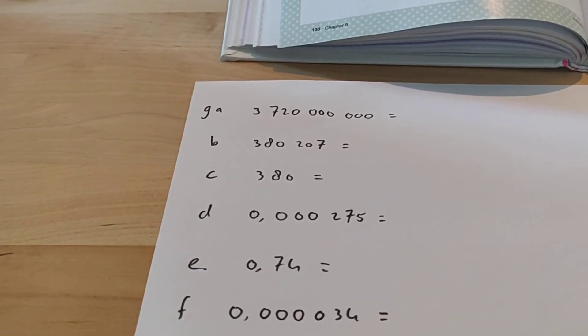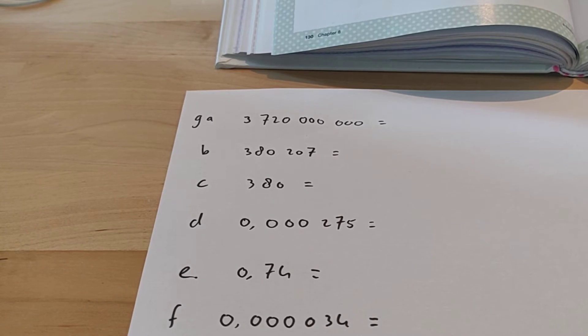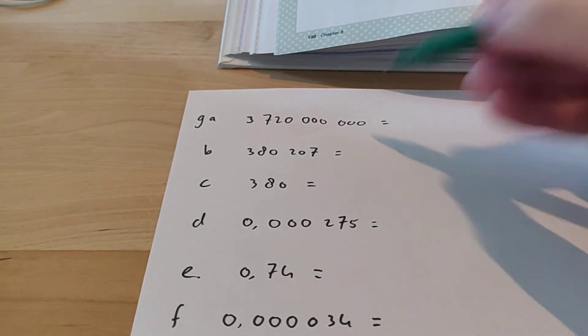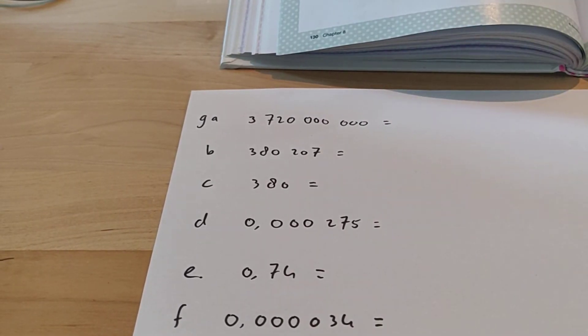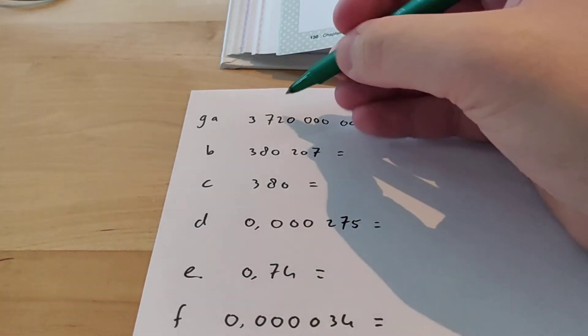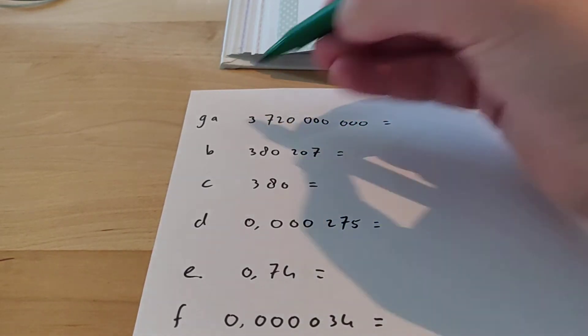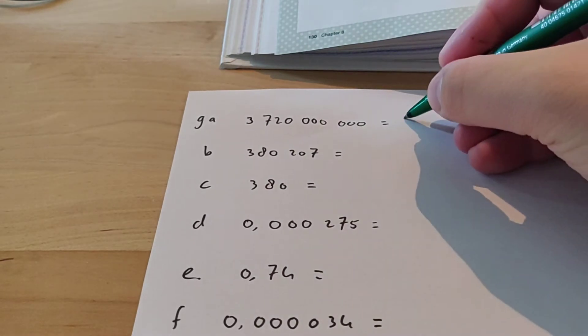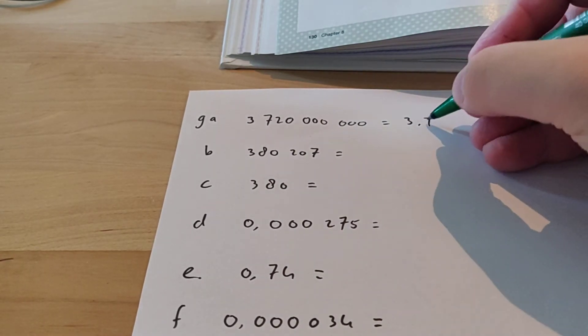Now we have to write these down in scientific notation, so I'll show you how to do that. If the number is very big, then you get a positive power. I'll show you that at the end of this exercise. But first we see this whole number. The first number we see is a 3, so I'm going to write down 3.72.